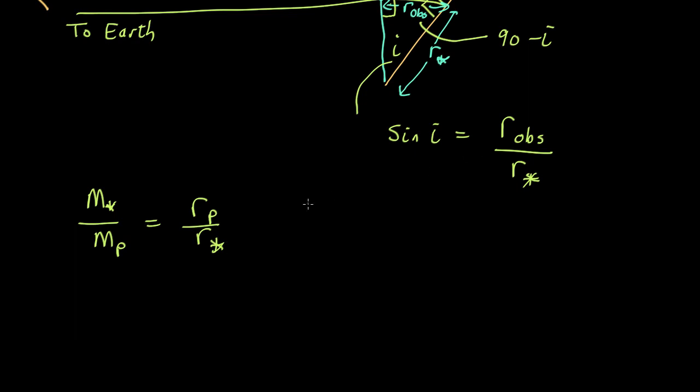So if we substitute this into here, we get... Let's rearrange it to make it mass of the planet. We get M planet equals M star, we're taking M planet up the side, M star, R star, over R planet.